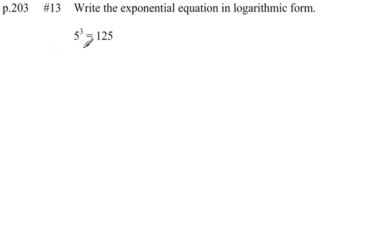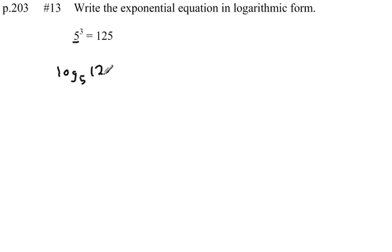When I write this as a logarithm, I can think of this number as my base. And I can say log base 5 of something equals something. So 5 to some power equals 125. And the power, because I'm saying 5 to some power, here's my power, equals 125. So there's that exponential equation in logarithmic form.